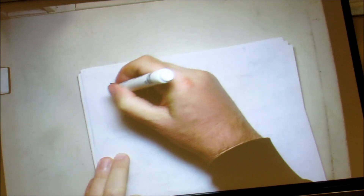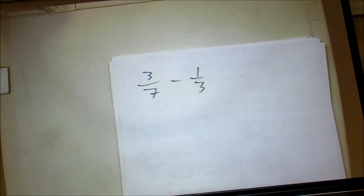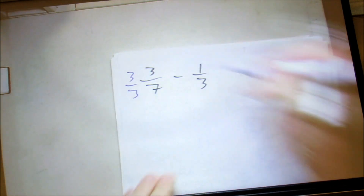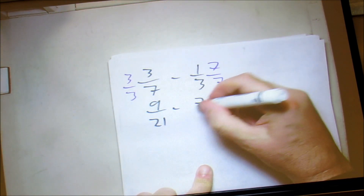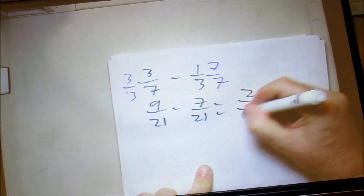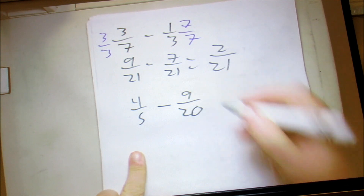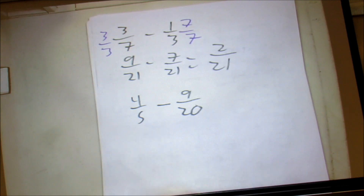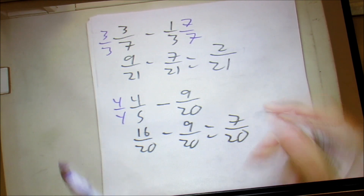For fraction operations, say we have 3 over 7 minus 1 over 3. We need to find the common denominator — the least common denominator is 21. Multiply the first by 3 over 3, the second by 7 over 7, giving 9 over 21 minus 7 over 21, leaving 2 over 21. For 4 over 5 minus 9 over 20, the LCD is 20 — multiply 4 over 5 by 4 over 4 to get 16 over 20, minus 9 over 20, which gives 7 over 20.